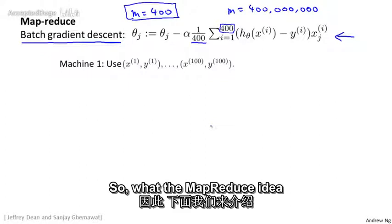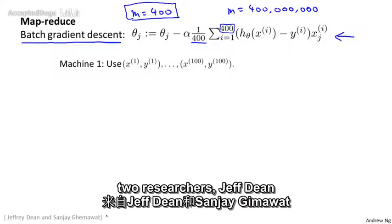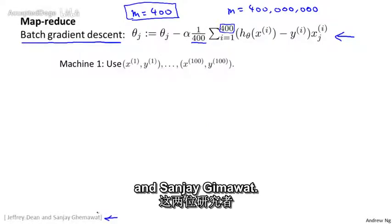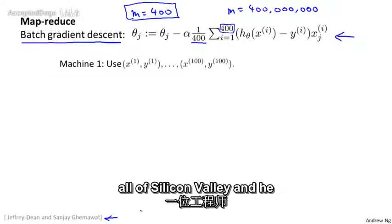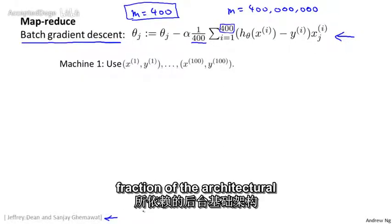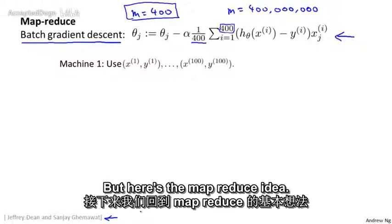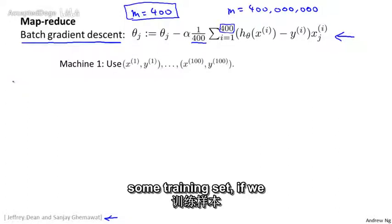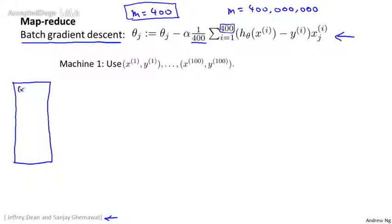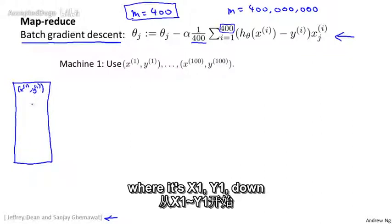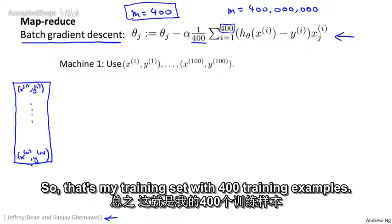So what the MapReduce idea does is the following. The MapReduce idea is due to two researchers, Jeff Dean and Sanjay Ghemawat. Jeff Dean, by the way, is one of the most legendary engineers in all of Silicon Valley—he built a large fraction of the architecture and infrastructure that all of Google runs on today. But here's the MapReduce idea. Let's say I have some training set, denoted by this box of x, y pairs: x1, y1, down to my 400 examples, xm, ym. So that's my training set with 400 training examples.